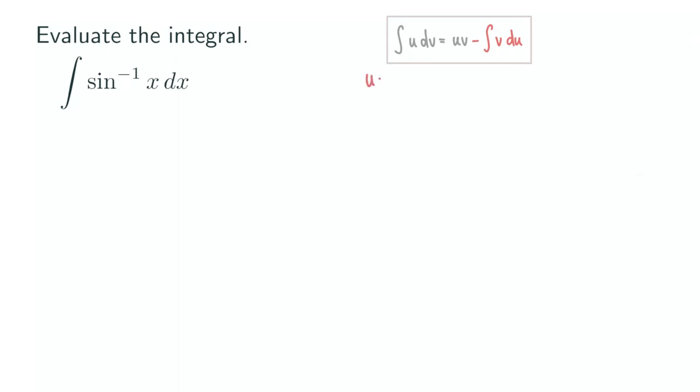So u is equal to something and then du is equal to something. And then I need to leave some space right here. So it will be v and then dv.